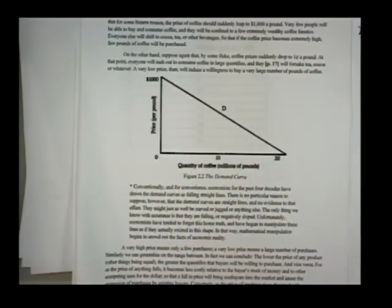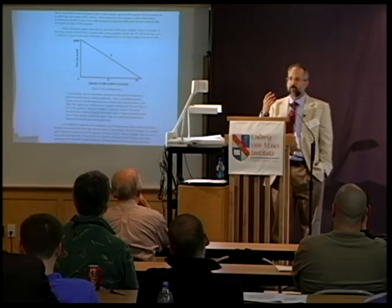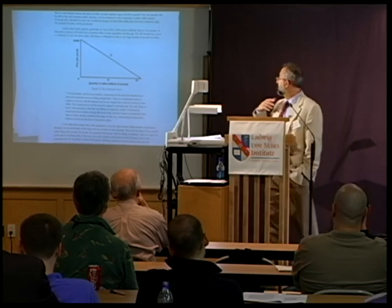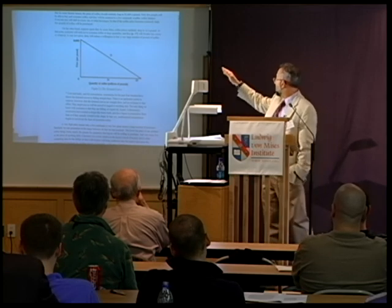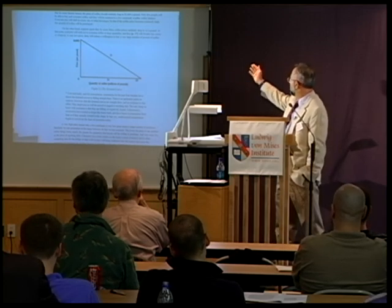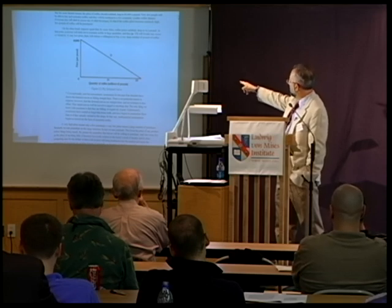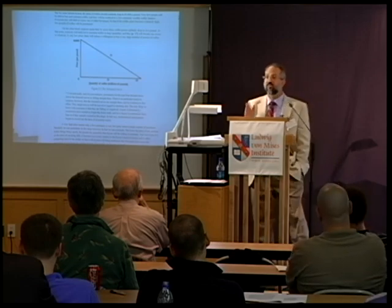At very high prices the amount of coffee purchased is extremely low — if you got as high as $1,000 per pound of coffee, even my wife who has to have her frozen colada from Dunkin Donuts every day would swear off coffee. As the price drops, the quantity demanded on the horizontal axis increases. So the demand curve is always downward sloping to the right — it has a negative slope.